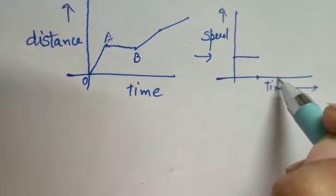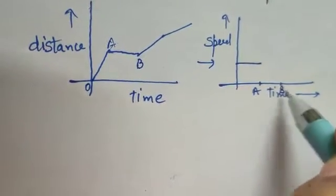So for the AB part, we can draw the graph on the x-axis.